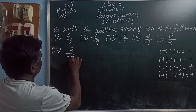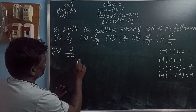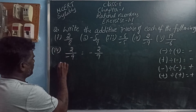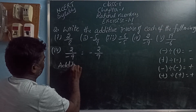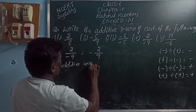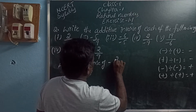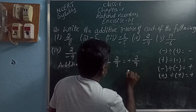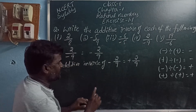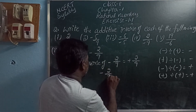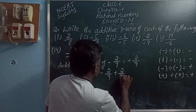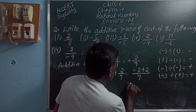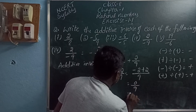2 by minus 9. Plus by minus gives minus 2 by 9. The additive inverse of minus 2 by 9 is plus 2 by 9. When adding these two: minus 2 by 9 plus 2 by 9. Write the common denominator and add the numerators: minus 2 plus 2 is 0. 0 by 9 is 0.